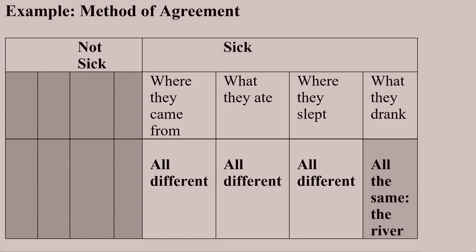Here's a little chart to help illustrate this relationship. Some people were sick, some people were not sick. With the Method of Agreement, I'm not worried about those who are not sick, because I want to say among those with the effect — those who are sick — what's the one thing that they have in common?